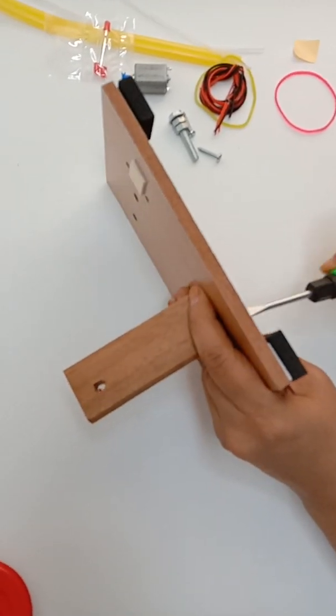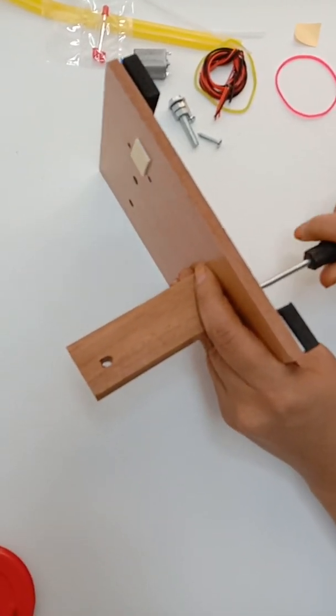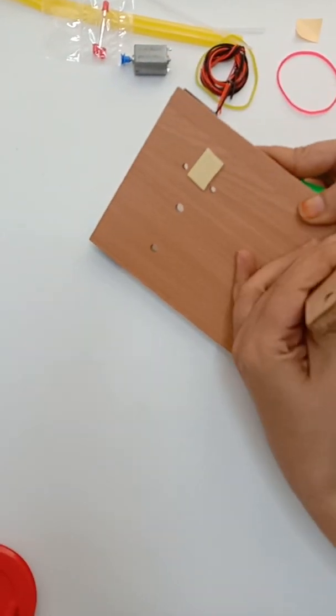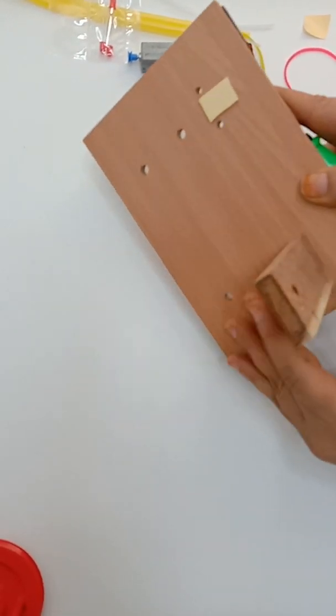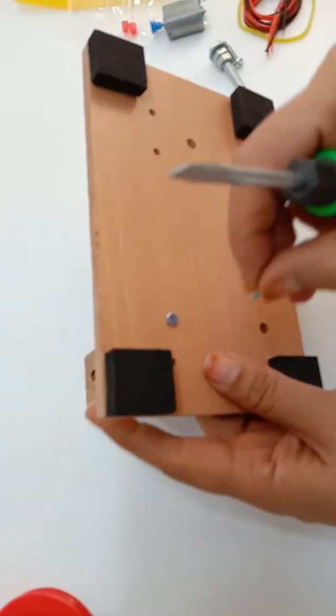Hold this batten with your hand so that the batten will not move along with the screwdriver. Otherwise the batten will keep on moving and it will not get fixed. Now it is time to place another screw into the second hole.